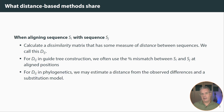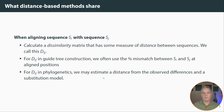But in phylogenetics, we want to use a more appropriate distance. So we might start with the proportion of mismatch and then estimate a distance from those observed differences using some substitution model. If you are not familiar with substitution models, you should see the nucleotide substitution model video in this series.